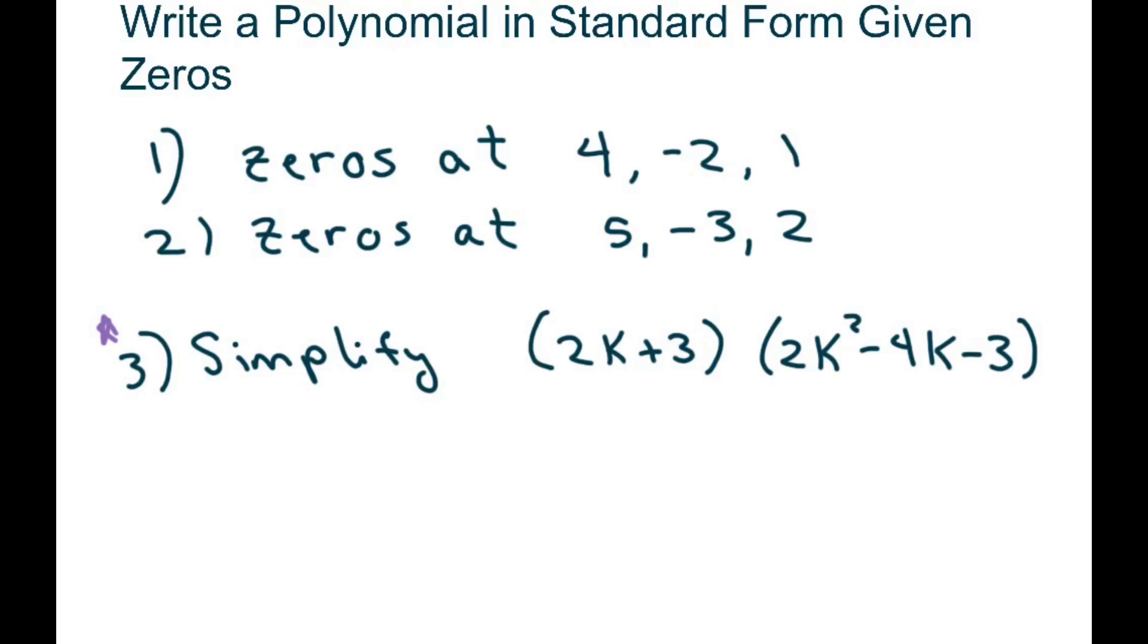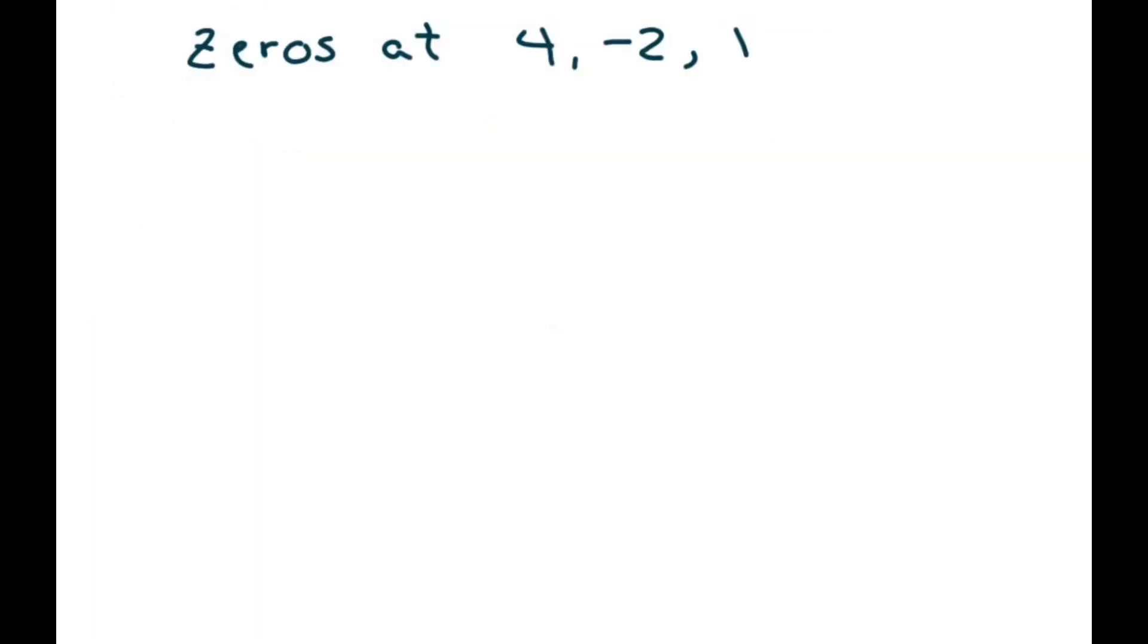So basically what we're going to do is write your polynomial. If this is your zeros, you're going to write it as y equals x minus 4 times x minus negative 2 times x minus 1. And that's going to give you x minus 4 times x plus 2 times x minus 1.